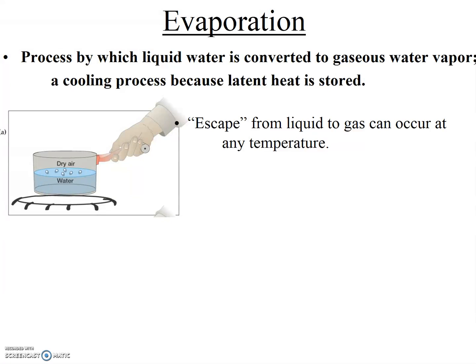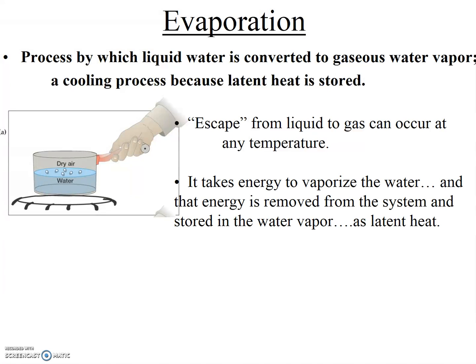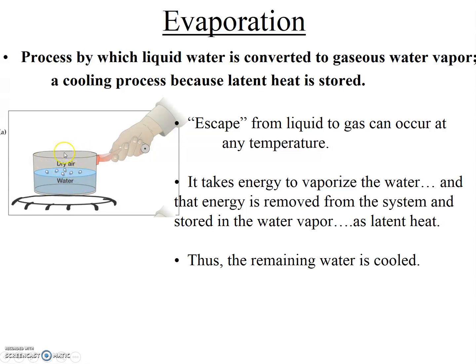Though evaporation occurs faster at higher temperatures, the breaking of hydrogen bonds can occur at any temperature. It takes energy to break these bonds, so when water evaporates, that energy is removed from the system and stored as latent heat. Since that energy is removed from the system, the remaining water is cooler. When water evaporates, the hydrogen bonds holding the liquid water molecules together are broken, and it takes energy to release the individual water molecules into the air, so the remaining water is cooler than it started.